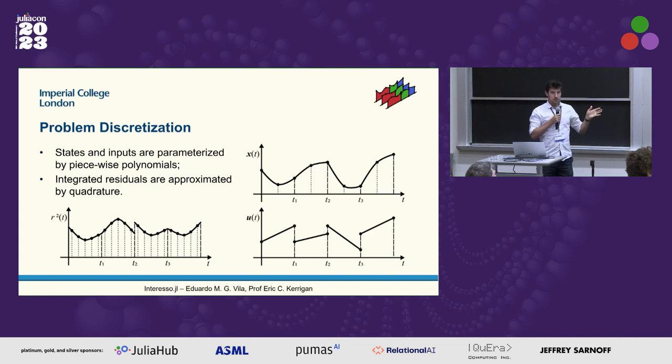In order to satisfy the differential algebraic equations that you might have, you need to integrate these. So we integrate this residual function that we wanted to be zero. In this case, unlike collocation, we are oversampling. So we're evaluating at more quadruple points than the decision variables that we have. And this gives us the property of not having those singular arcs.